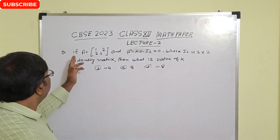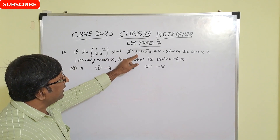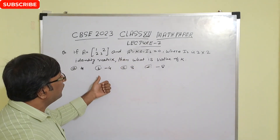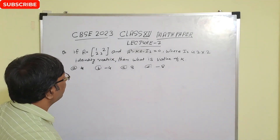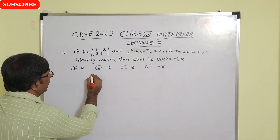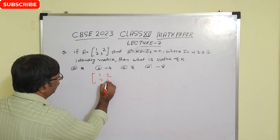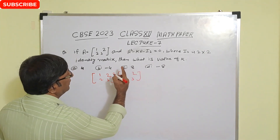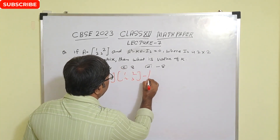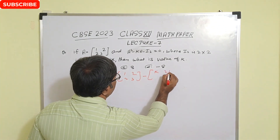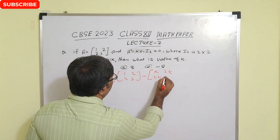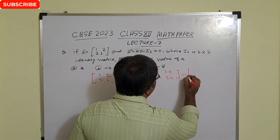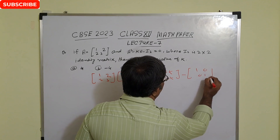Next question: matrix A is given and A² - kA - I₂ = 0, where I₂ is the identity matrix of order 2. Find the value of k. We compute A². A² equals A×A, which gives the matrix with entries 1, 2, 2, 3 multiplied by 1, 2, 2, 3. Then k×A gives entries k, 2k, 2k, 3k. And we subtract I₂, the 2×2 identity matrix (1, 0; 0, 1), and set equal to 0.